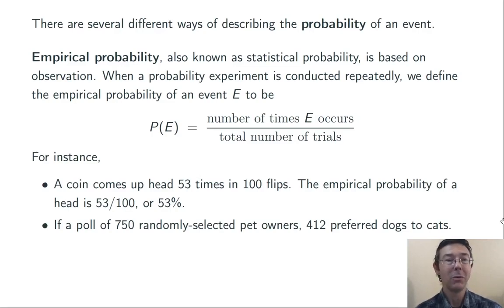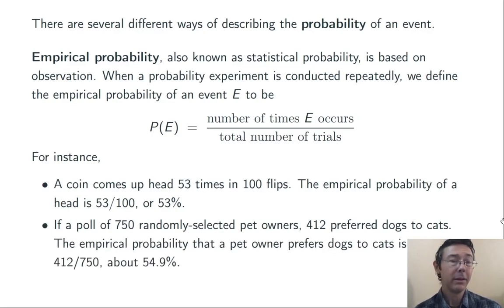Now suppose we do a poll of 750 randomly selected pet owners. If 412 of them prefer dogs to cats, then the empirical probability that a pet owner prefers dogs to cats is 412 divided by 750, about 54.9%.